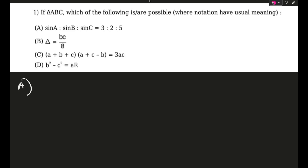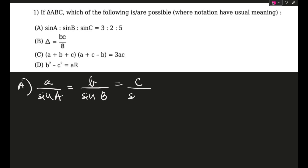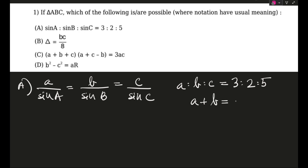Option A: sin A : sin B : sin C = 3 : 2 : 5. By the sine rule, a/sin A = b/sin B = c/sin C, meaning the ratio of side lengths is also 3 : 2 : 5. The problem is the triangle inequality — the sum of any two sides must be greater than the third. But here a + b = c, so the triangle is not possible. Option A is wrong.